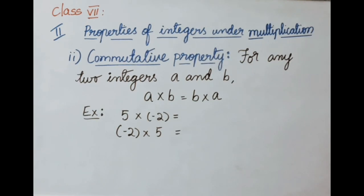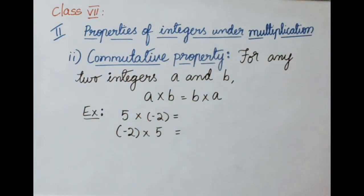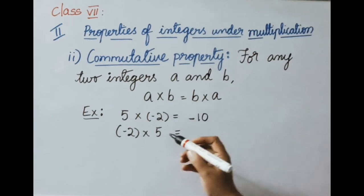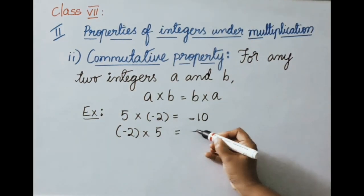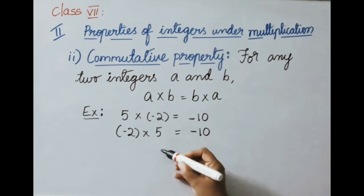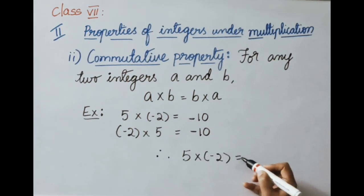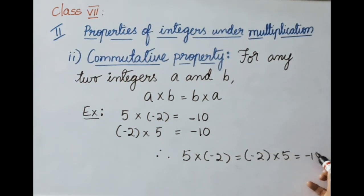Second: commutative property under multiplication. For any two integers A and B, A into B equals B into A. Example: 5 into minus 2 equals minus 10 — that is A into B. Now B into A: minus 2 into 5 also equals minus 10. So A into B equals B into A. Therefore integers follow commutative property under multiplication.